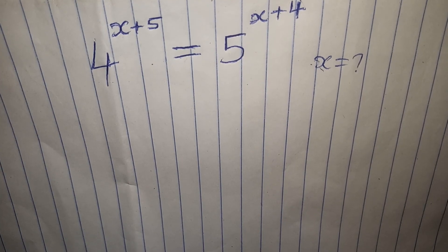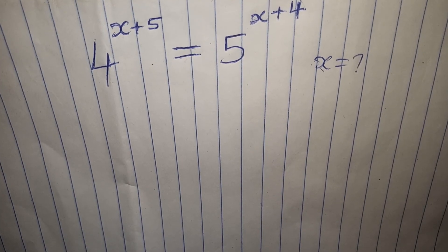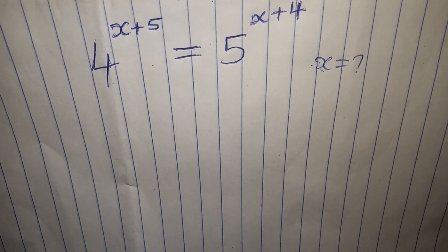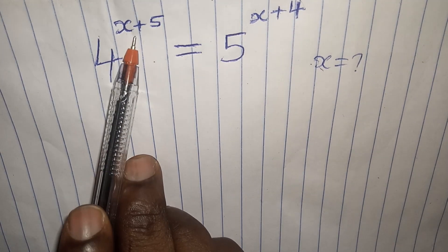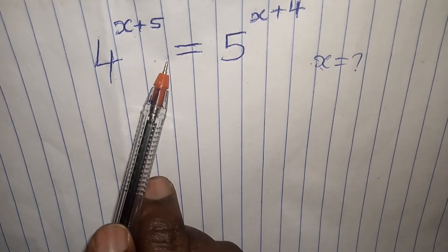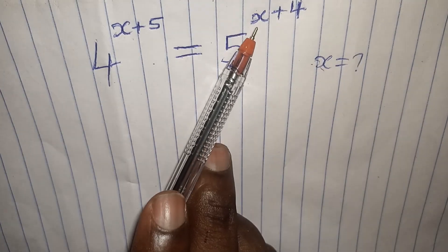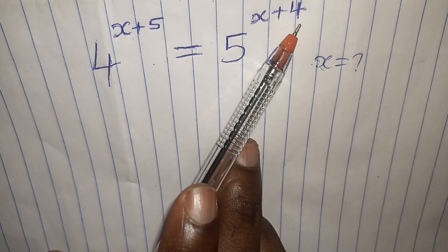Hello guys, welcome again to my channel. Today's video I want to solve a nice Math Olympiad exponential challenge which reads: 4 to the power of x plus 5 is equals to 5 to the power of x plus 4.